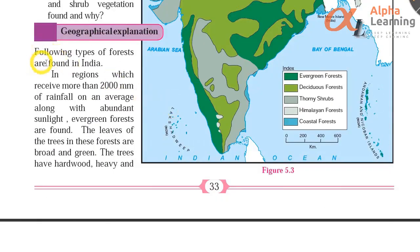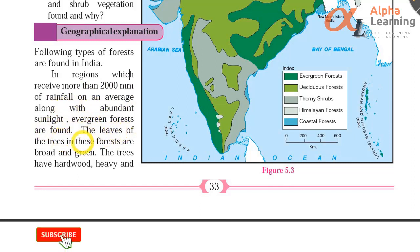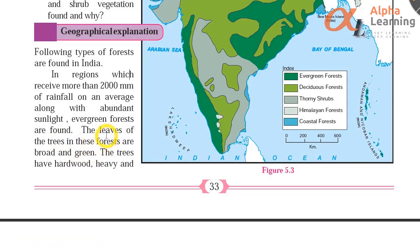Following types of forests are found in India. In regions which receive more than 2000 mm of rainfall on an average, along with the abundant sunlight, evergreen forests are found. The leaves of the trees in these forests are broad and green. So evergreen forests are found where there is more than 2000 mm of rainfall — they are green throughout the year.